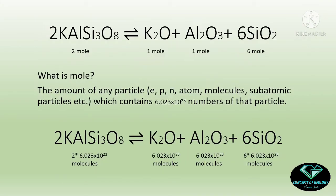Before doing anything we need to have a clear conception of mole. Let us concentrate on this chemical reaction, which is the formation of KAlSi3O8 — potassium feldspar. Potassium feldspar breaks down into K2O, Al2O3, and SiO2. If we balance this reaction we get: 2 KAlSi3O8 broken down into 1 mole of K2O, 1 mole of Al2O3, and 6 moles of SiO2.